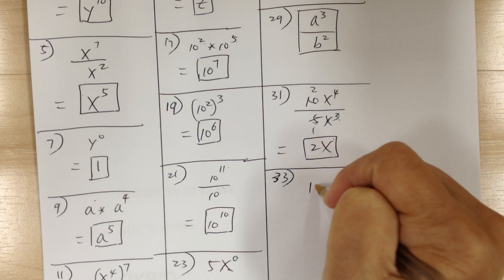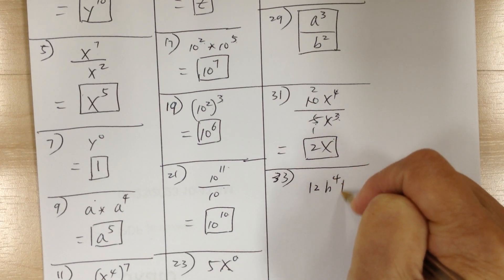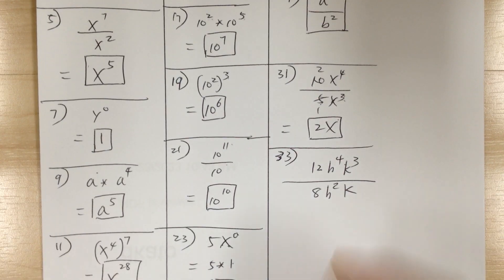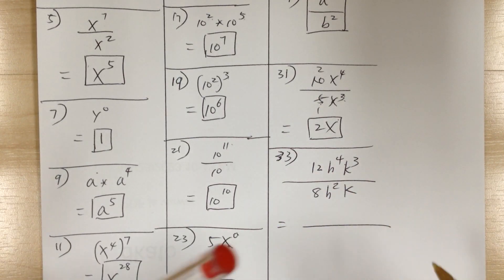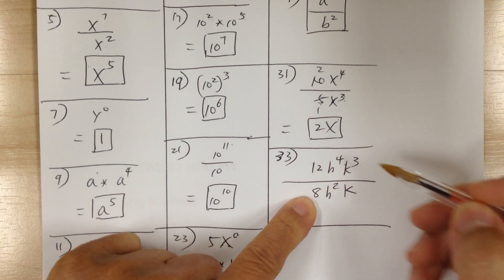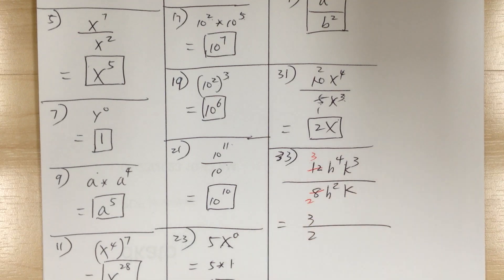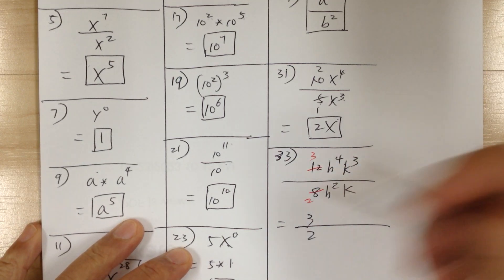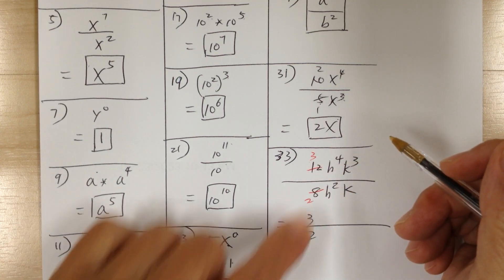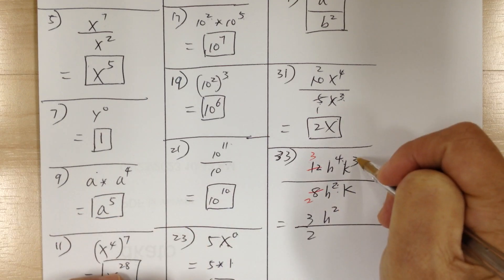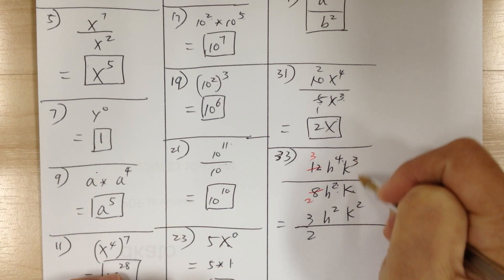Number 33, you have 12h to the 4 k to the 3 over 8h squared k. As you cancel, write it down so you don't forget. 12 and 8 — divide by 4 — you get 3 and 2. Write down 3 over 2 right away. Then h to the 4 over h squared gives you h squared, since 4 minus 2 is 2. And k cubed over k gives you k squared, since 3 minus 1 is 2.